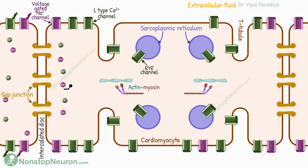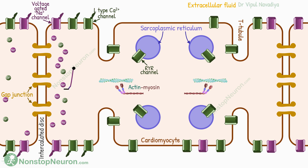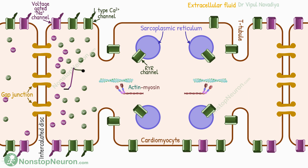Entry of positive ions raises membrane potential in the current cell as well. When the potential reaches the threshold, voltage-gated sodium channels open. So now sodium enters in large quantities directly into this cell, causing upstroke. Soon, the L-type calcium channels also open, causing prolonged entry of calcium. This contributes to a long plateau in the action potential. Thus, an action potential is generated in this cell also.